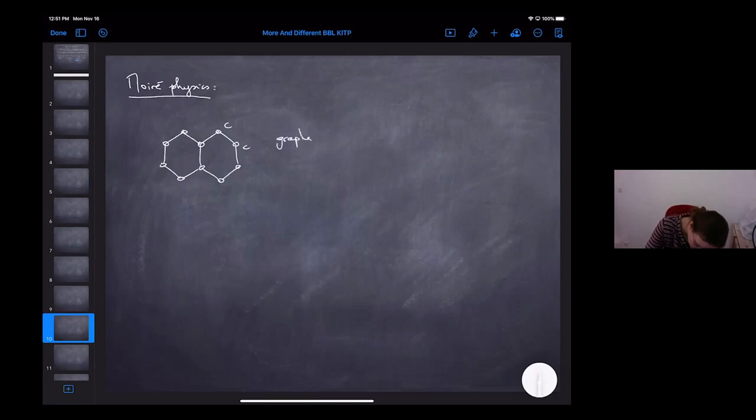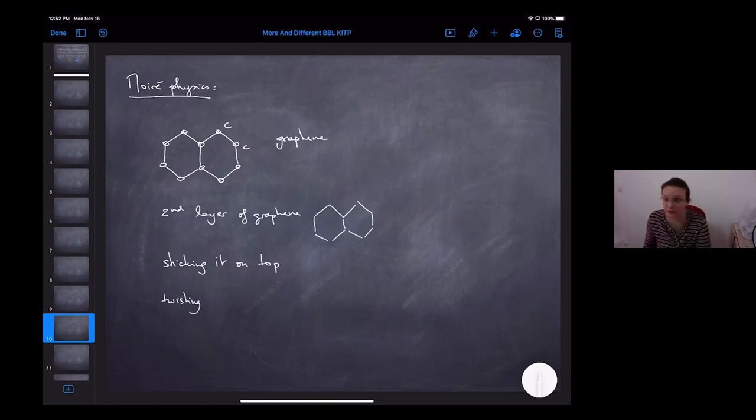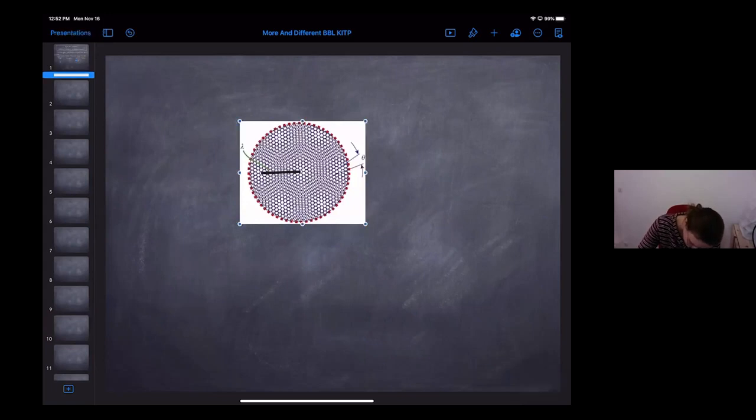It is extremely well understood, at least from the theoretical point of view. It has some gapless fermions which have some linear dispersion. But Moiré physics is not just about graphene. It wouldn't be anything new. It's actually about taking graphene and then a second layer of graphene, sticking it on top and twisting. Very easy on a serious state to do it. Much less easy as an experimentalist.